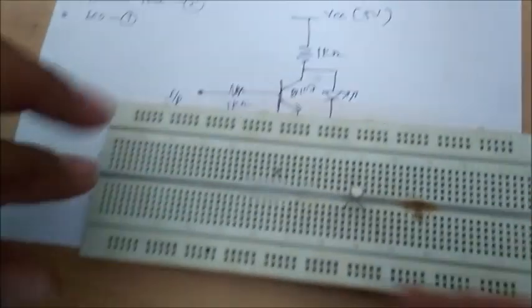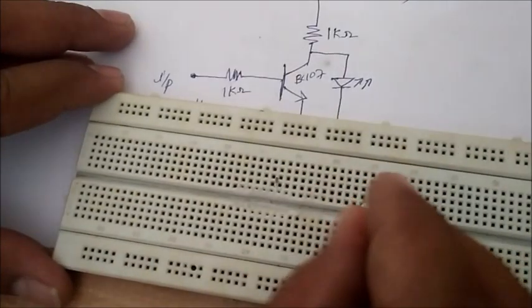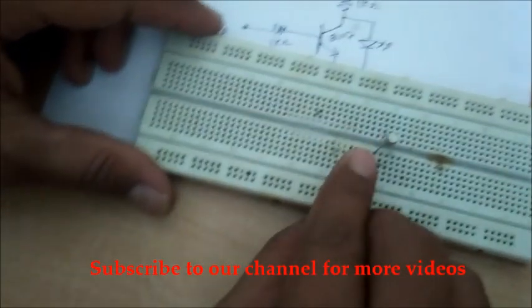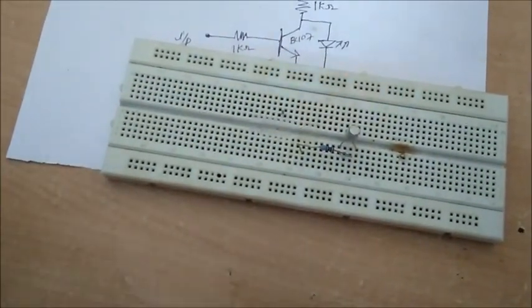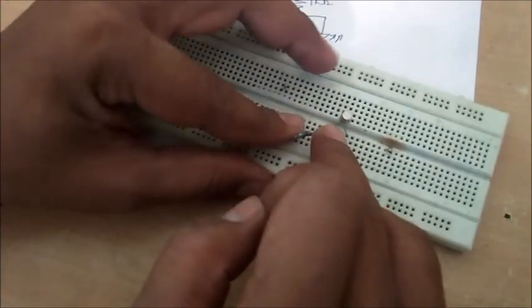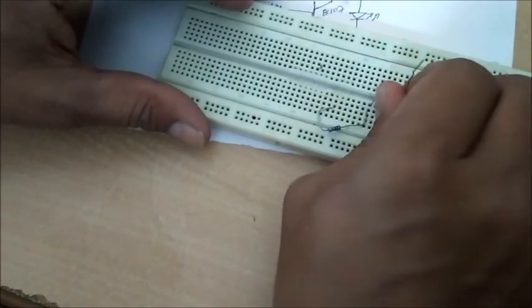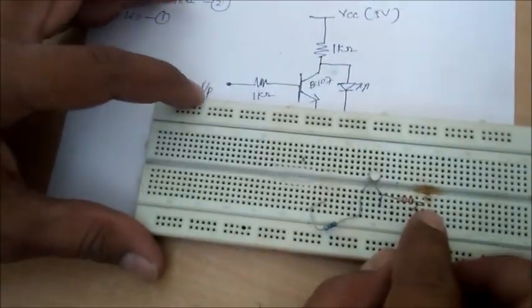Connect the resistor to the base and one more resistor to the collector. Now I have connected one resistor to the input and the second resistor to the collector.